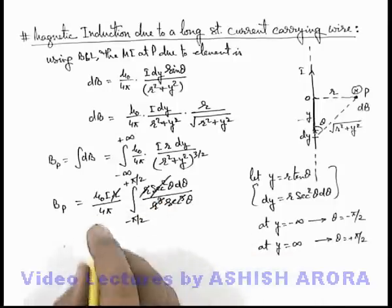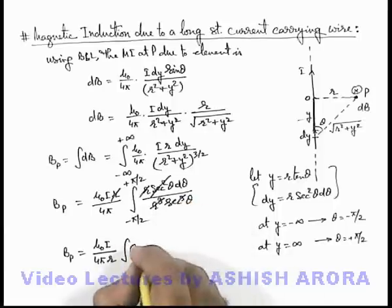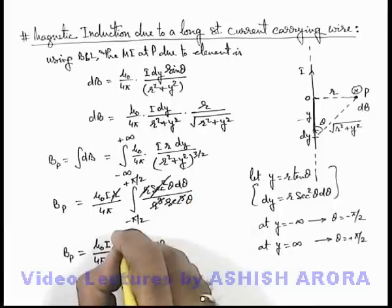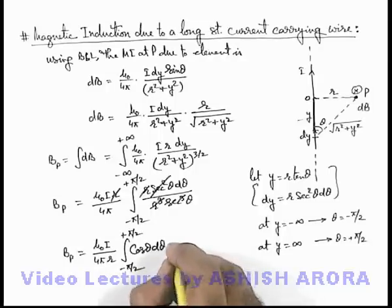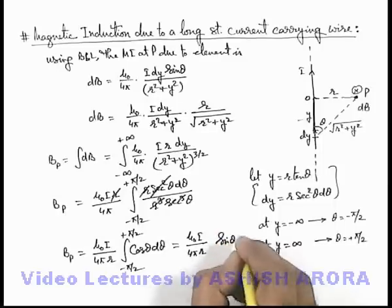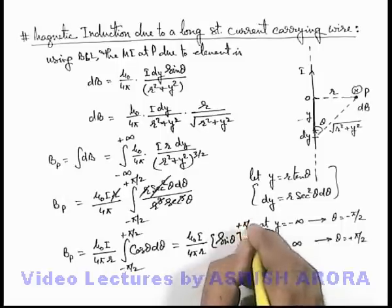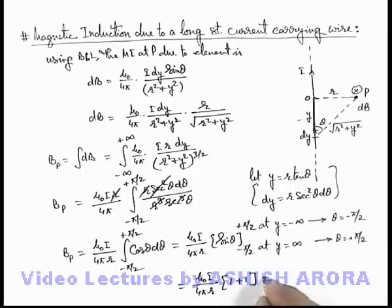Taking out the 1/r factor, the magnetic field at point P is written as (μ₀·i / 4π·r) times the integral of (1/secθ) = cosθ·dθ from −π/2 to +π/2. The integral of cosθ is simply sinθ, so this becomes (μ₀·i / 4π·r) · [sinθ] evaluated from −π/2 to +π/2. Substituting the limits: sin(π/2) = 1 and sin(−π/2) = −1, giving a factor of 2, which cancels with the 4 in the denominator.